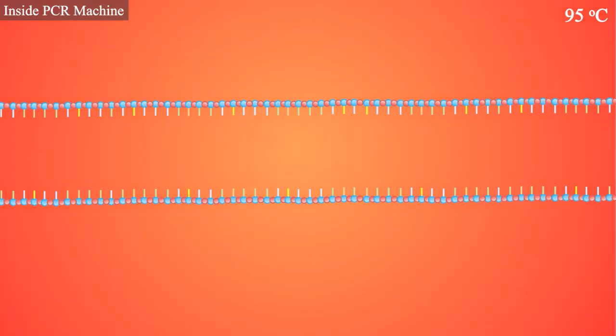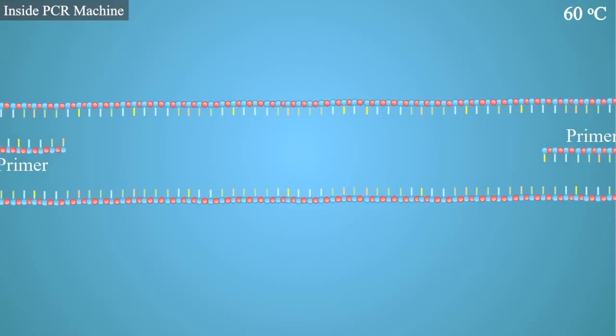The machine then cools down the reaction mixture. This allows primers to attach to the ends of the DNA segment that we want to copy, which is usually a region that varies a lot between different individuals.